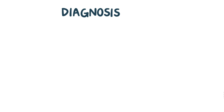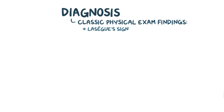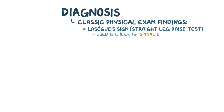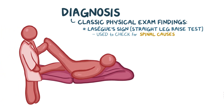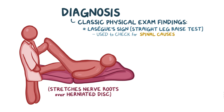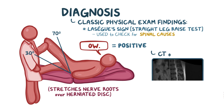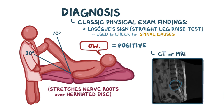To diagnose sciatica, there are some classic physical exam findings. The Lasseg sign, also called the straight leg raise test, is most often used to check for spinal causes. In this test, a person lays down on their back and an examiner lifts each leg with the knee straight. This stretches the nerve roots over the herniated disc or the object causing compression. If the sciatic pain worsens when the legs are between 30 and 70 degrees, the test is positive. Finally, a CT or MRI should be done to look for the cause.